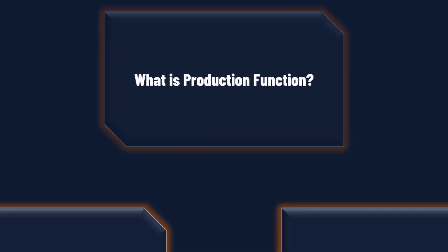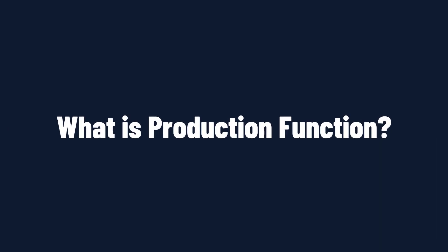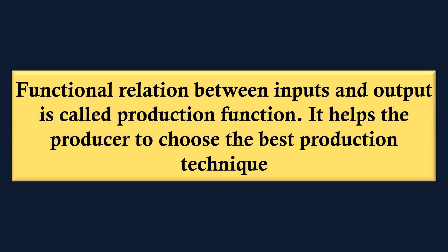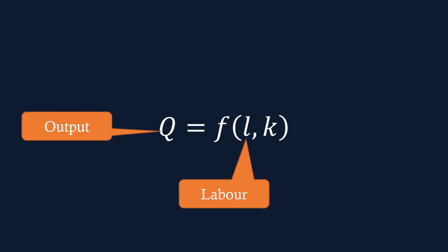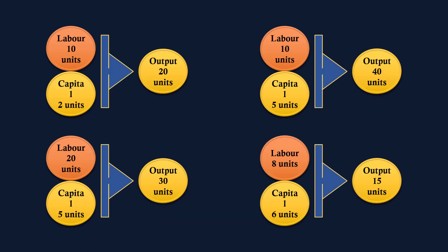We shall start with what is Production Function. The functional relation between inputs and output is called Production Function. It helps the producer to choose the best production technique. It can be symbolically represented as Q is a function of L and K, where Q represents output, L represents labour, and K represents capital. A producer can combine different quantities of labour and capital and get different levels of output.